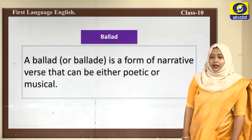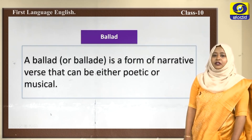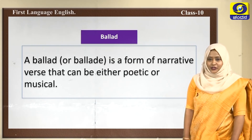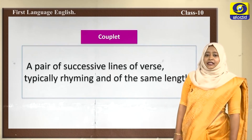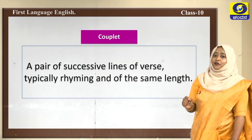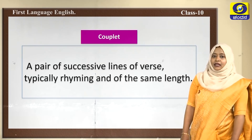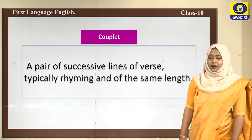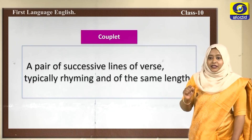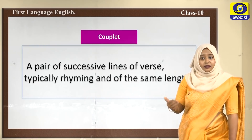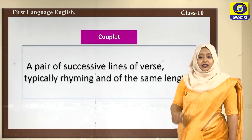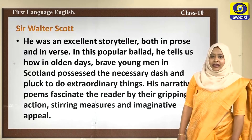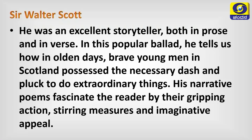The next one is a ballad — a form of narrative verse that can be either poetic or musical. Then comes the couplet, which is a pair of successive lines of verse, typically rhyming and of the same length. Couplets exist in Kannada, where we call them vachanas, and in Hindi, where we call them dohas. So we have different types and styles of poem.